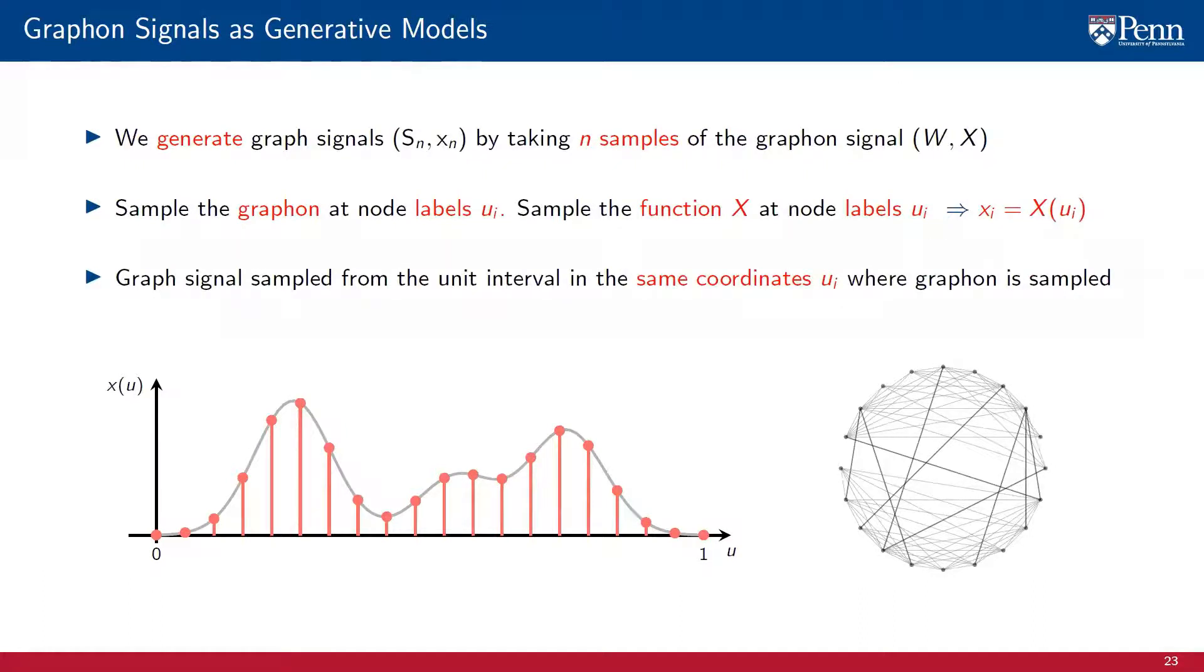An important point to emphasize in this definition is that the sampling of the graphon and the function X must be at the same labels. The sampling must be consistent.